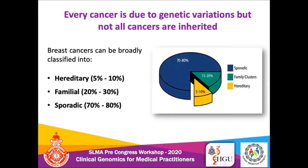Every cancer is due to genetic variations, but not all cancers are inherited. Breast cancers — or any cancer — can be broadly classified into three main categories. The majority are sporadic, accounting for about 70 to 80 percent. Then we have the familial group, which accounts for about 20 to 30 percent. And the hereditary or inherited group, which accounts for about 5 to 10 percent of all cancers.